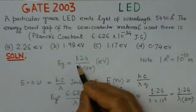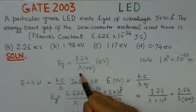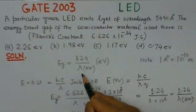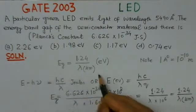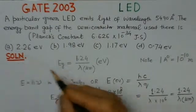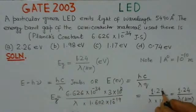We can very easily substitute the value of lambda here, and we can find the value for the energy band gap, which comes out to be 2.26 electron volts.